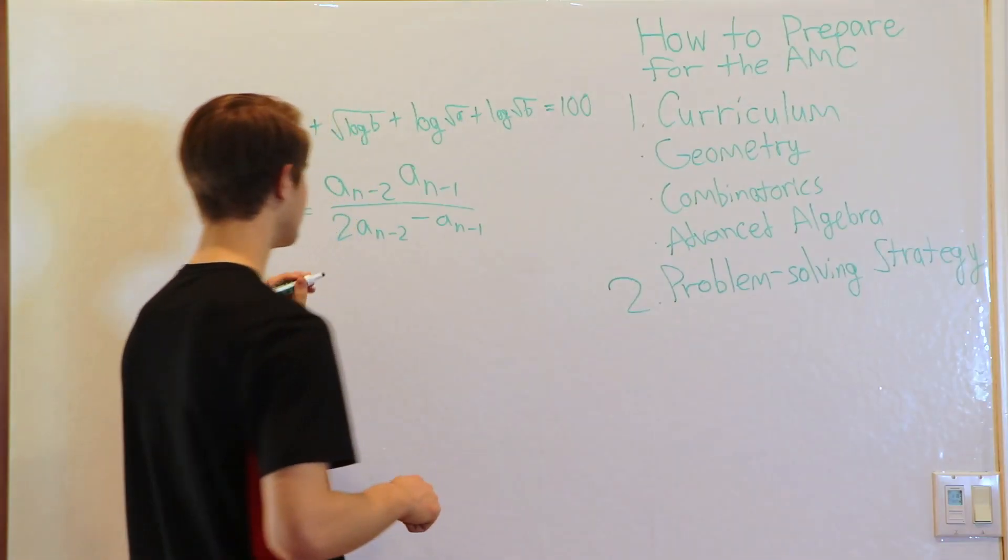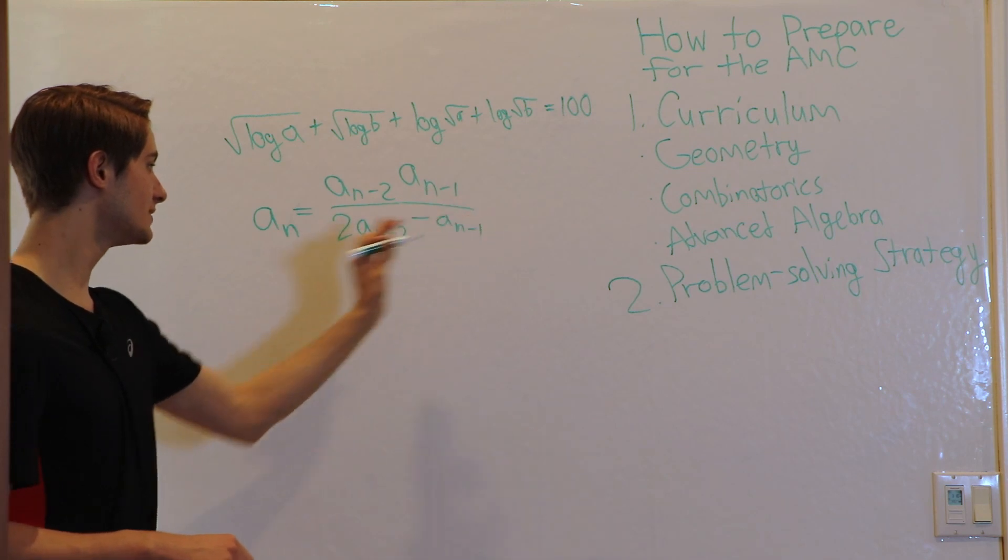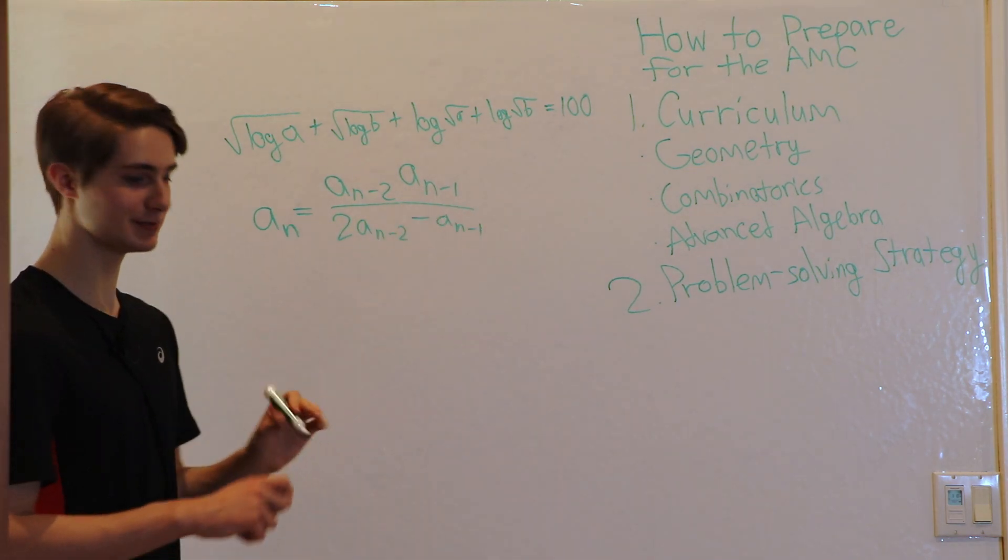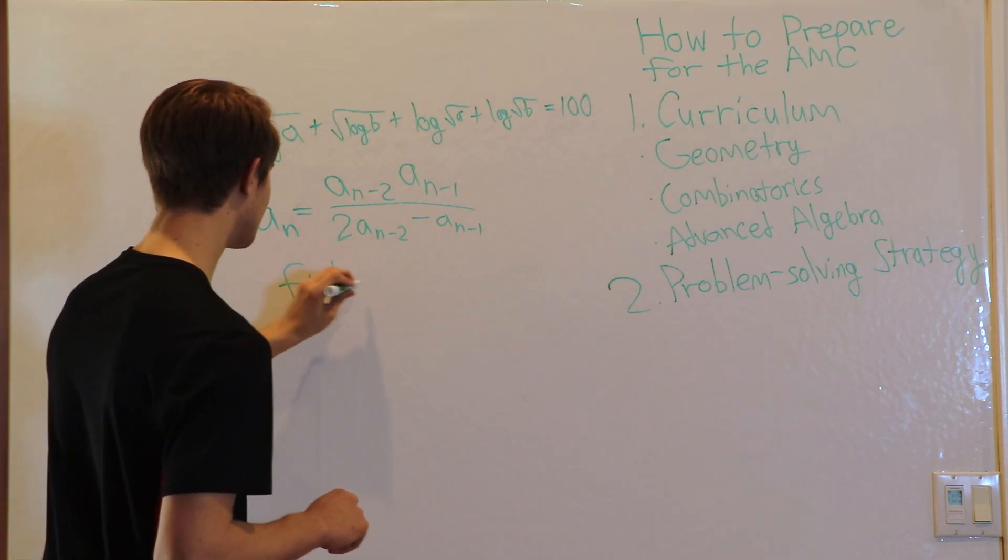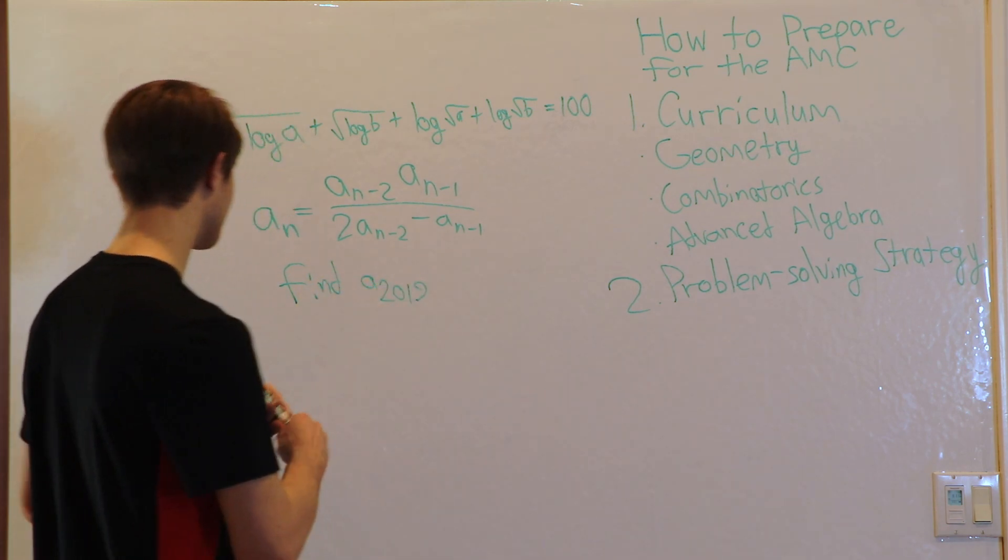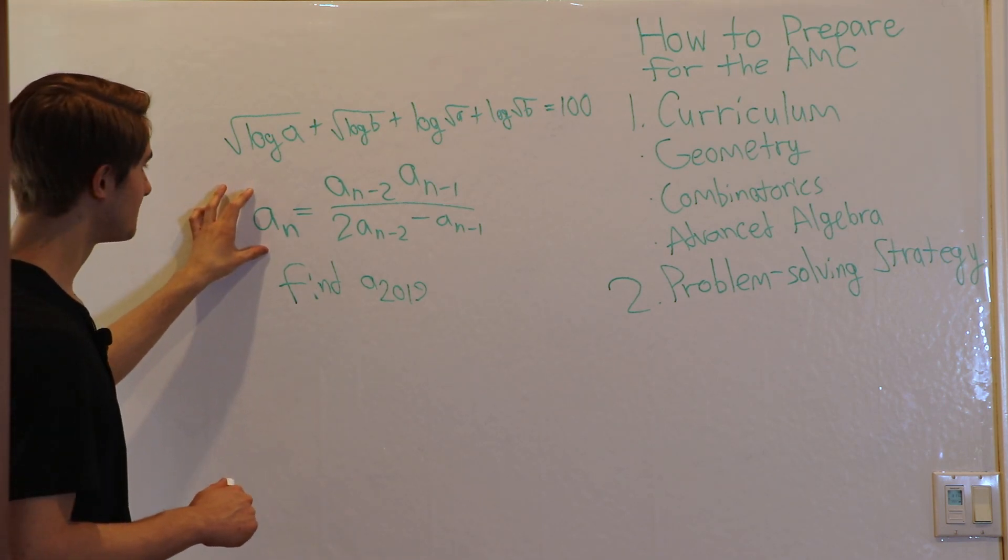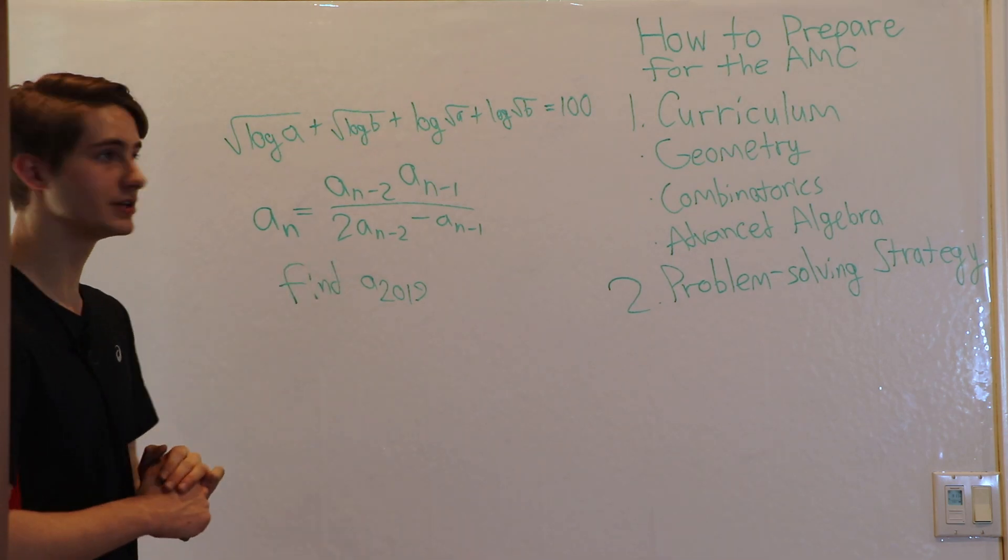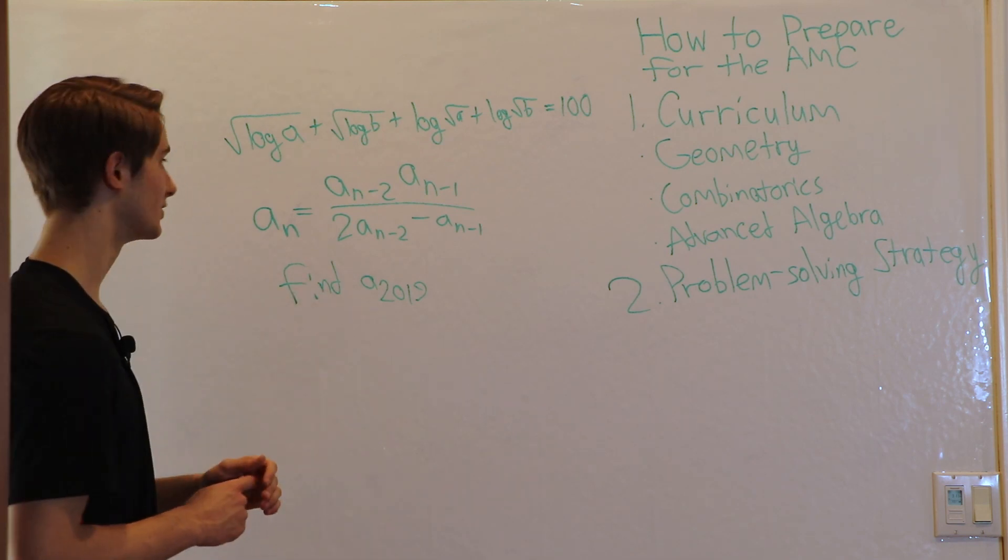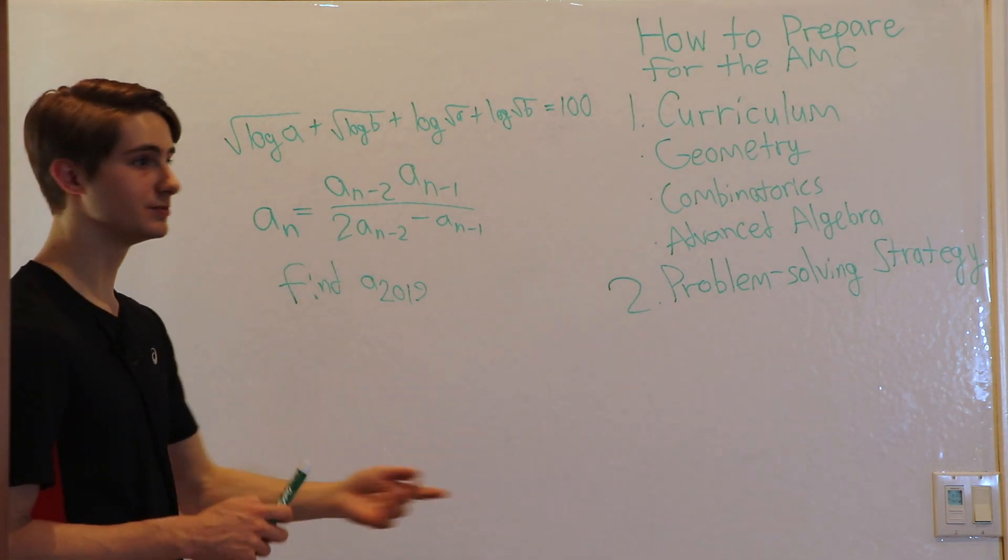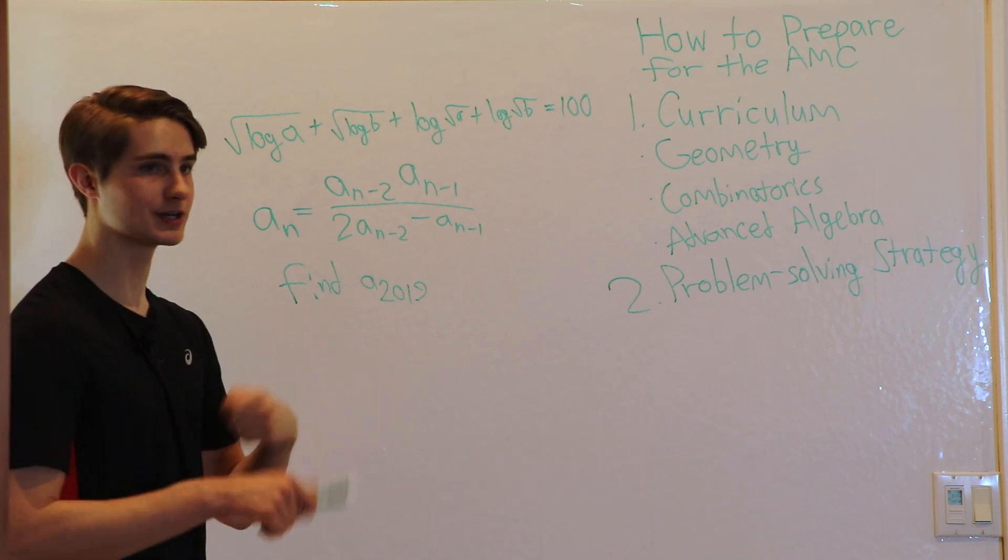You could do the same thing for a sequence problem. So say I had this sequence. We have the sequence a sub n equals a sub n minus 2, a sub n minus 1 divided by 2 a sub n minus 2 minus a sub n minus 1. At first this sequence also seems very confusing. What does it even mean? But if they say find a sub 2019 you know you're not just gonna go through the process 2,000 times and find the next term. But you also don't really know where to start. How can we play with this sequence to figure out what it really means? Well the way to do a problem like this is to try writing out the first few terms. What's a sub 0, a sub 1, a sub 2, a sub 3, a sub 4, and on and on.